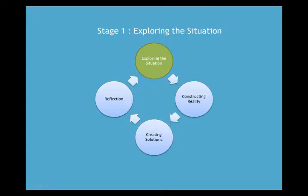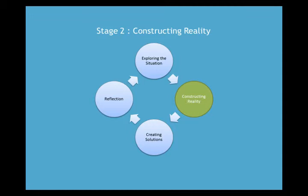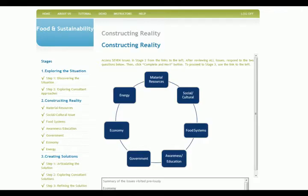After thoroughly exploring the situation, defining the problem, and seeking out expert advice or interpretation, students are ready to move on to Stage 2: constructing their own reality of the scenario. In this stage, students are exposed to the rich context of the problem. Seven different issues related to the food sustainability problem are provided to students to further refine their understanding: material resources, social-cultural, food systems, awareness education, government, economy, and energy. Within each of these issues, students are asked to complete three major activities: articulating questions, exploring reality, and exploring interpretation from consultants.